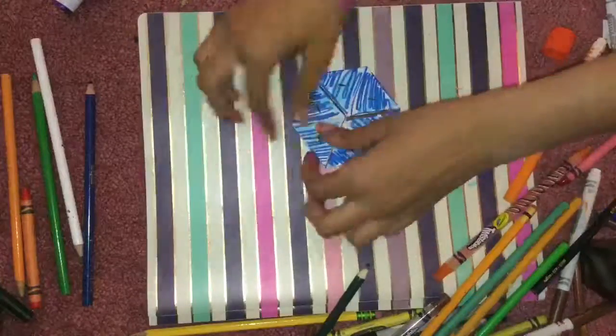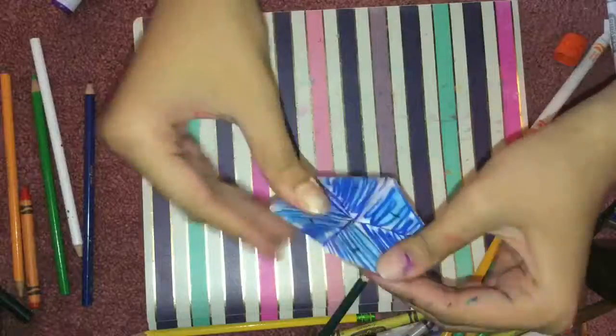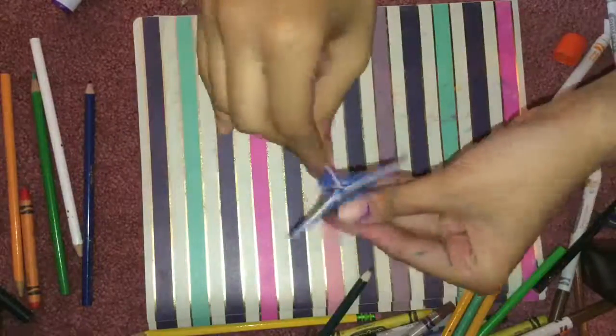And you're finally done. Then crease the edges of the hexaflexagon to make a really flat looking hexaflexagon.